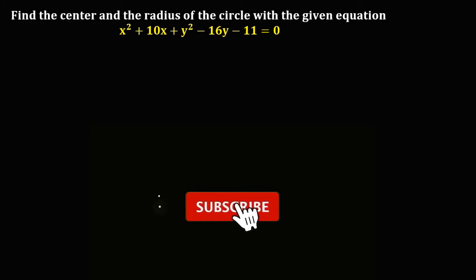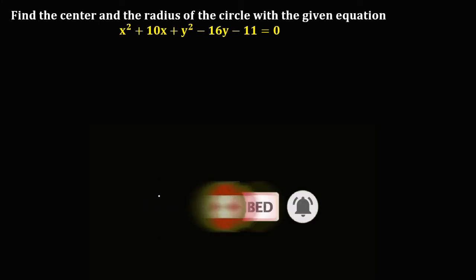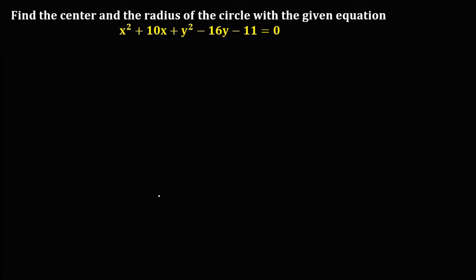Welcome to MathStoria. We're going to learn how to find the center and the radius of the circle with the given equation: x squared plus 10x plus y squared minus 16y minus 11 equals 0.